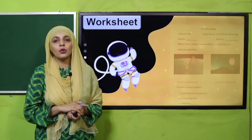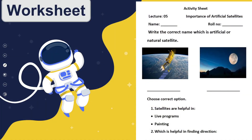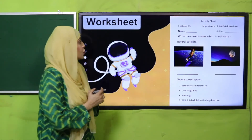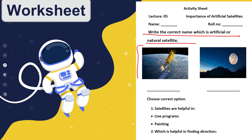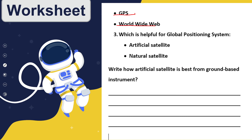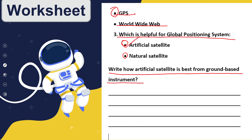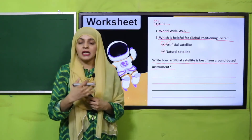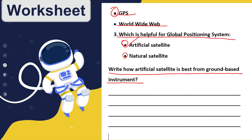Now is the time for practice. You can download this worksheet from the description box below this video, or get it in print from your teacher. Write down your name and roll number and start the worksheet. Identify which satellites are artificial and which are natural — the moon is a natural satellite and the other is artificial. Choose the correct option: satellites are helpful in finding directions, which is GPS — the Global Positioning System. Write how artificial satellites are better than ground-based instruments.